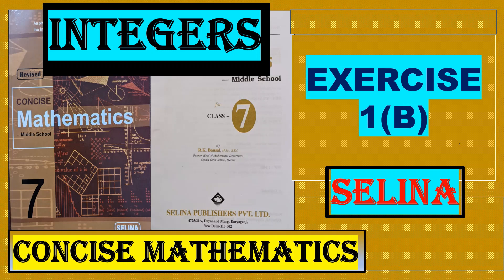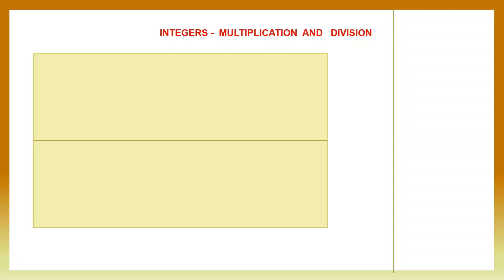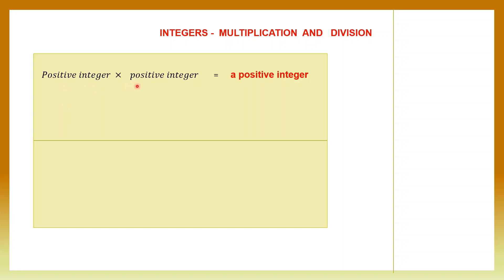Hello students, let's do integers exercise 1b. In this exercise, we are going to be doing division of integers, but let's revise multiplication also alongside. When you multiply a positive integer with another positive integer, your product or your answer is also positive. Let's take an example side by side.